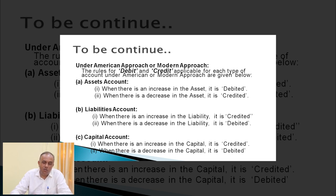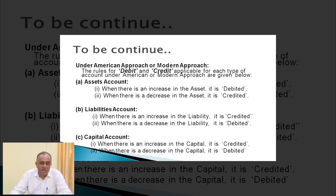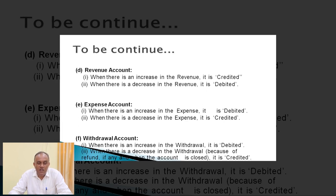For liabilities accounts, as per the modern approach, when there is an increase in the liability it is credited; when there is a decrease in the liability it is debited. For capital: when there is an increase in the capital of the business it is credited; when there is a decrease it is debited. For revenue: when there is an increase in the revenue it is credited; when there is a decrease it is debited.